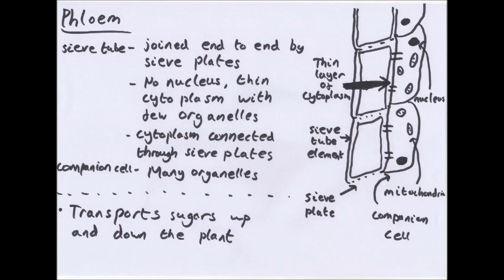Sieve tubes are living cells and also transport other solutes alongside sucrose. The holes in the sieve plates allow solutes through into each sieve tube. The lack of a nucleus and other organelles in the sieve tube means it cannot survive on its own, so there is a companion cell for every sieve tube. The companion cell has enough organelles to support both itself and the sieve tube — particularly mitochondria needed for active transport — as well as many ribosomes, Golgi apparatus, and all the structures needed to survive.